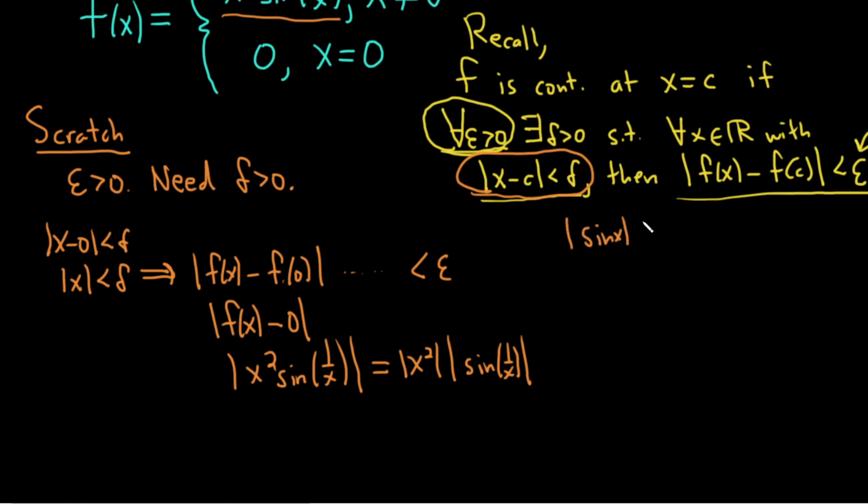So this is going to be always true for all x. So this is less than or equal to the absolute value of x squared times 1. And this is just x squared, because we can drop the absolute value because it's already positive.